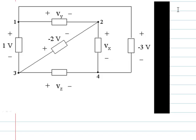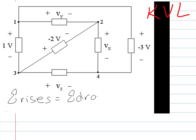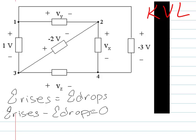Here we are going to practice using Kirchhoff's voltage law, which basically says over any closed circuit the sum of all the voltage rises should equal the sum of all the voltage drops. We're going to take advantage of it by adding up all the rises and subtracting off all the drops, and that should equal zero. That's just easier to do it that way.